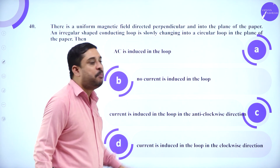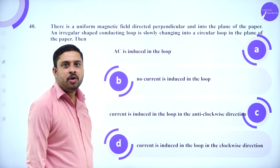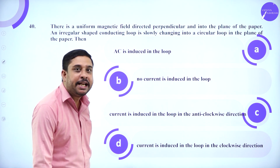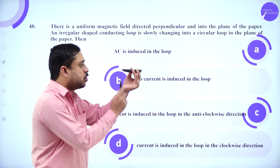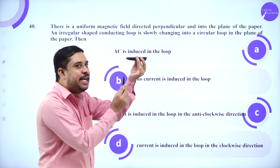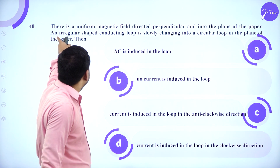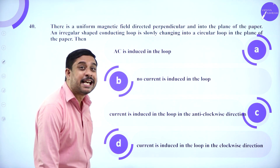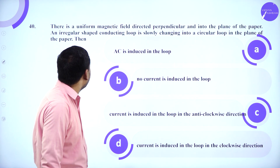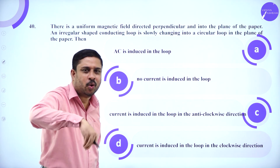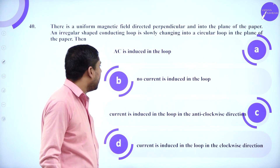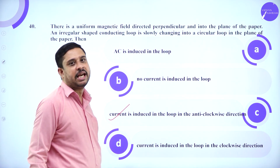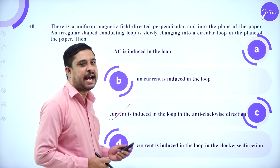There is a uniform magnetic field directed perpendicular and into the plane of the paper. An irregular conducting loop is changing into a circular loop within this plane. A current is induced in the loop, and it flows in the anticlockwise direction.